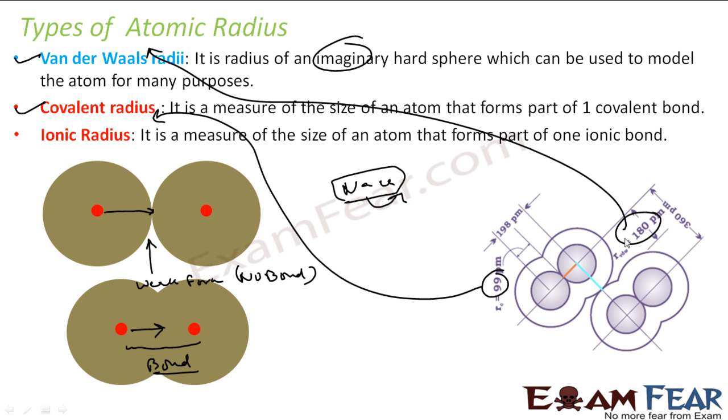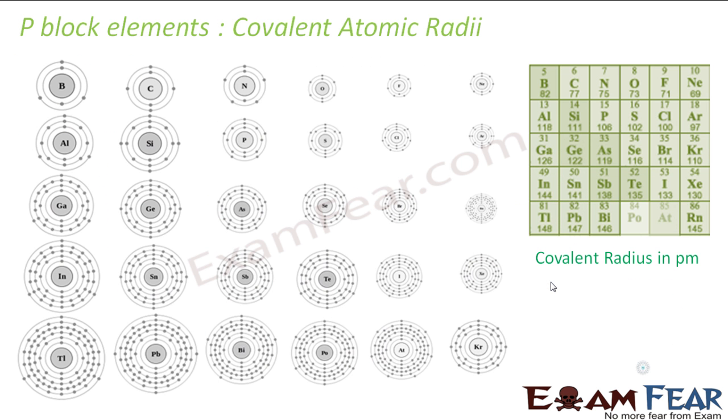Why? Because if you talk about the Van der Waals radius, in these two molecules there is just force of attraction between them. There is no bond between this unit and this unit, just the Van der Waals force of attraction. But if you talk about the actual reaction, actual bond formation has taken place, and then you find the radius that becomes a covalent or ionic radius.